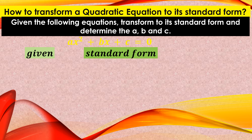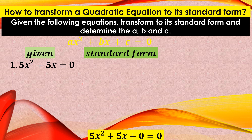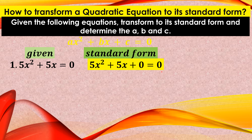We will now transform a quadratic equation to its standard form. Given the equations, transform to standard form and identify A, B, and C. Remember A and B are the numerical coefficients of the variables, and C is the constant. For the first one — 5X squared plus 5X equals 0 — is this already in standard form? We can write it as 5X squared plus 5X plus 0 equals 0.